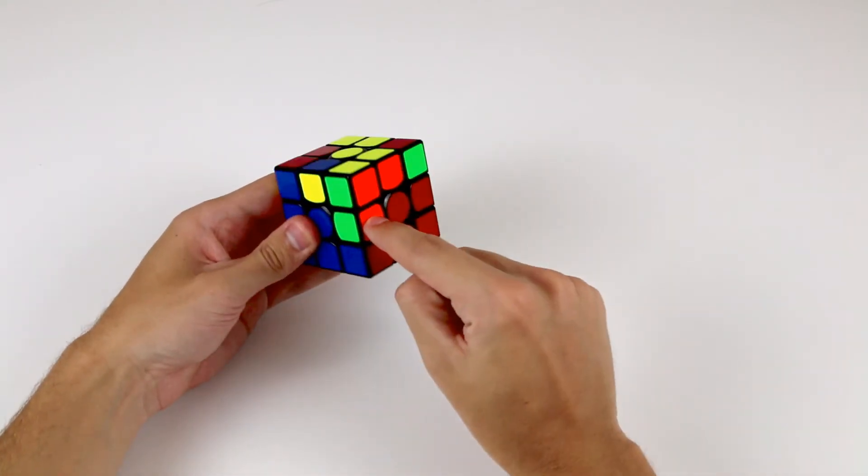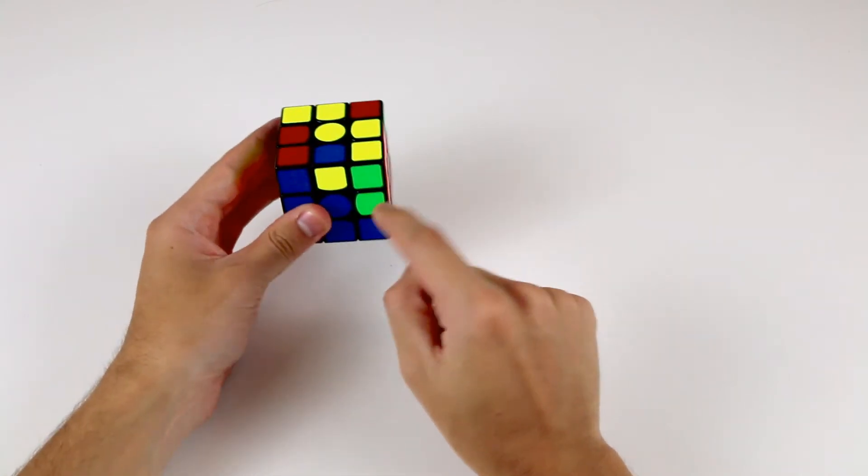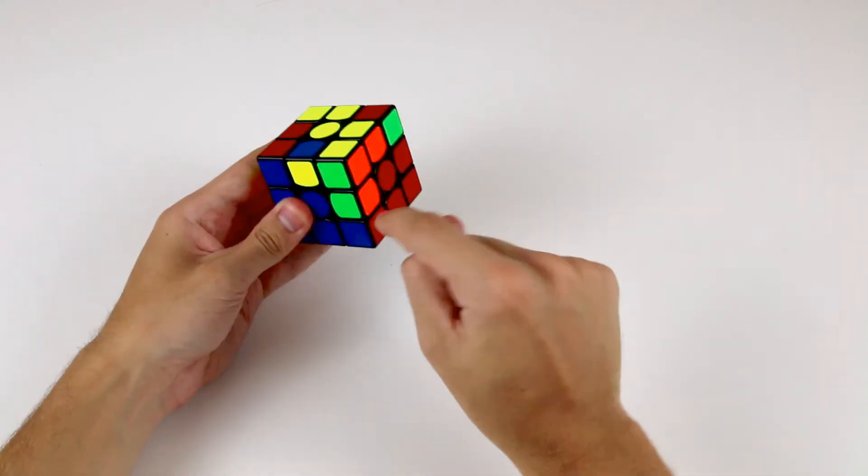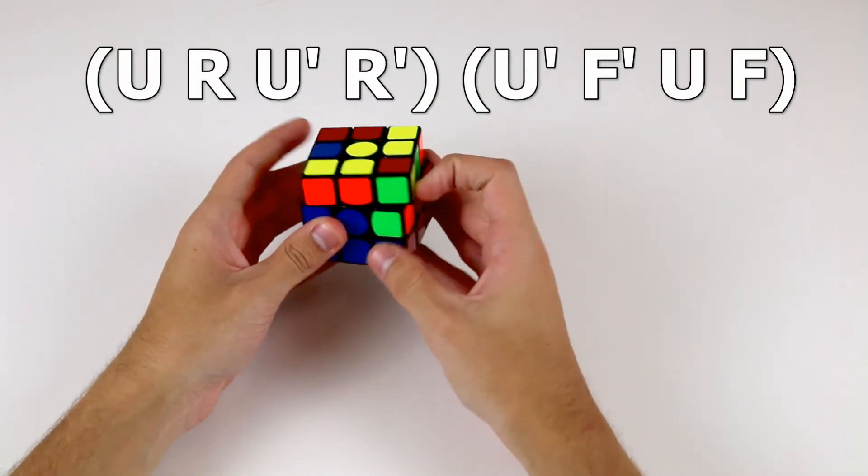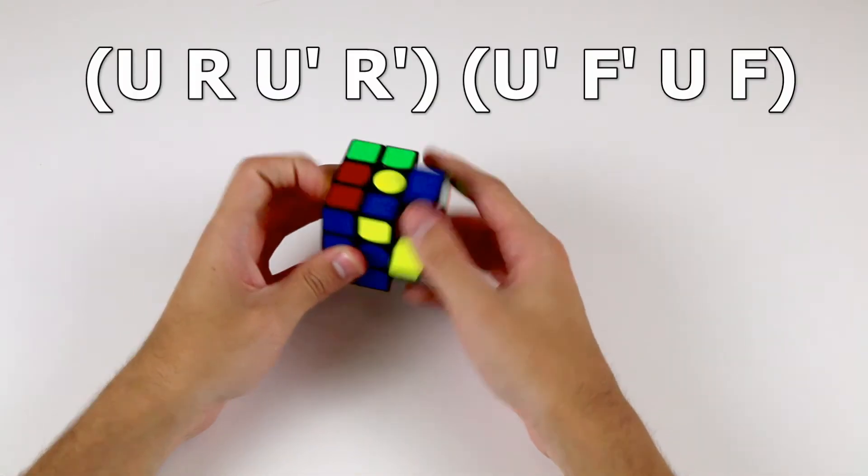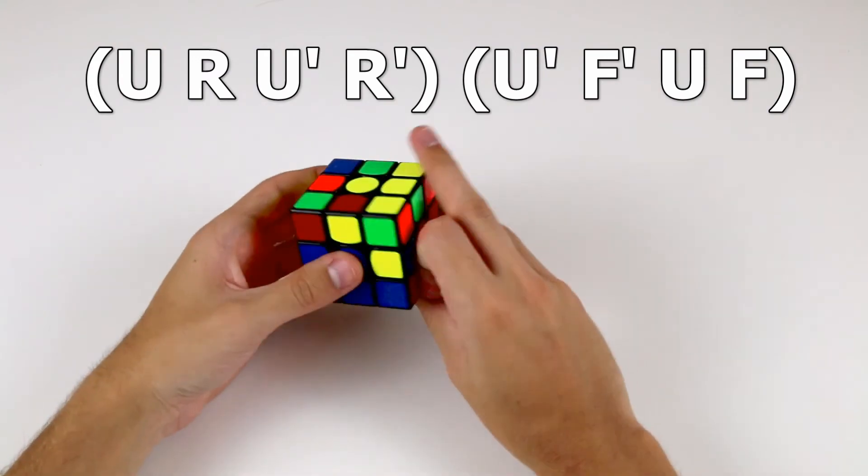So what we need to do to take this edge out of its incorrect position is just pretend that we're going to put this yellow edge in here. So moving it to the right, we do U R U' R' U' F' U F.